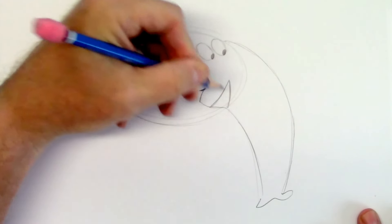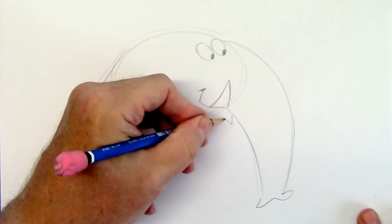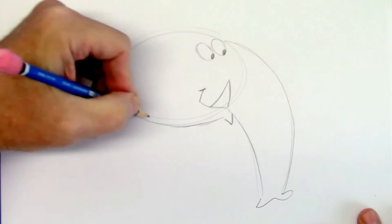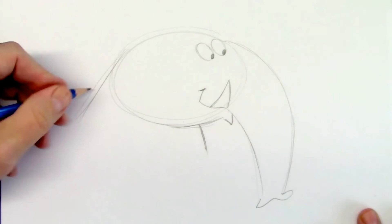Now we're going to add the tusks. And a little lower lip. And bring it back across where the oval is. Make them fat.